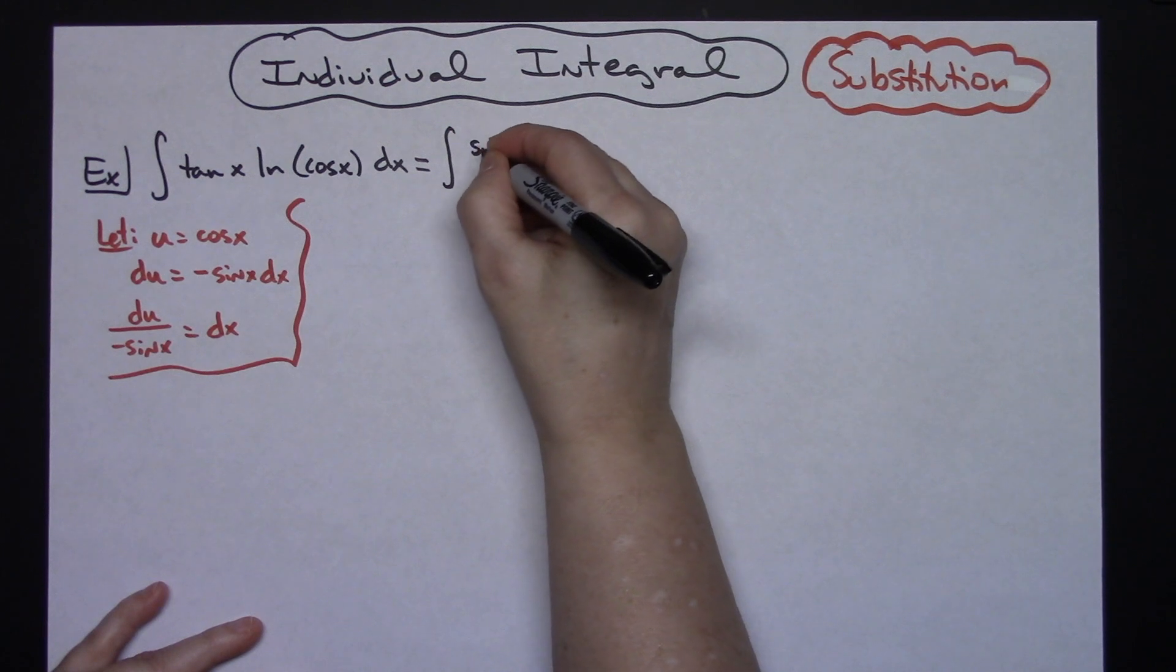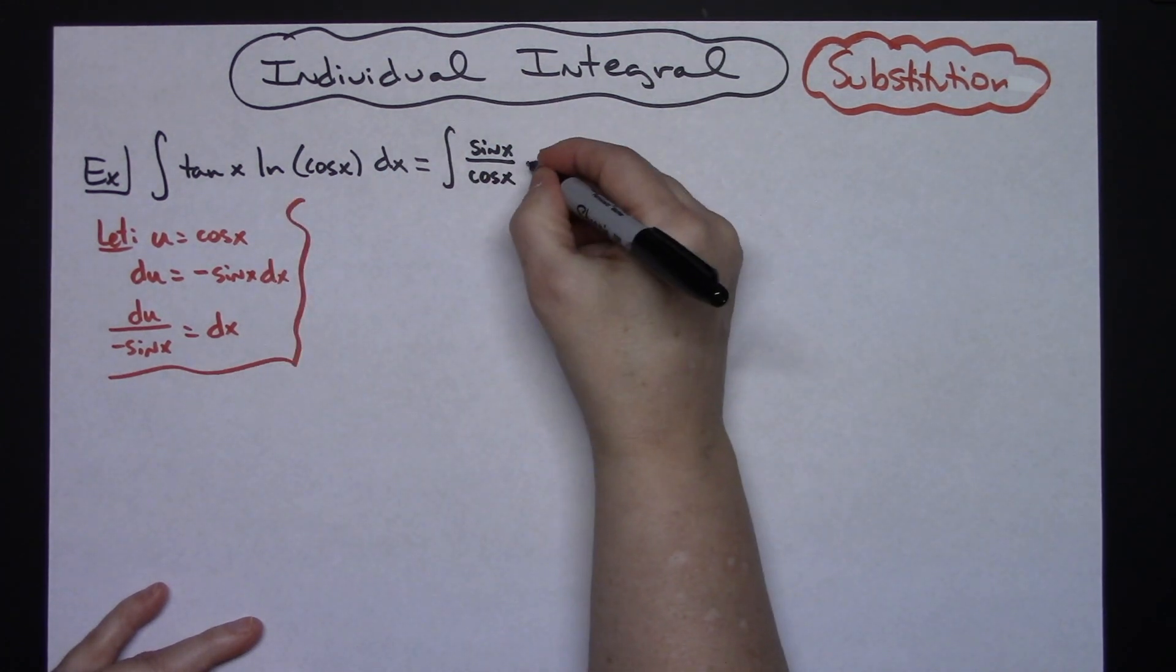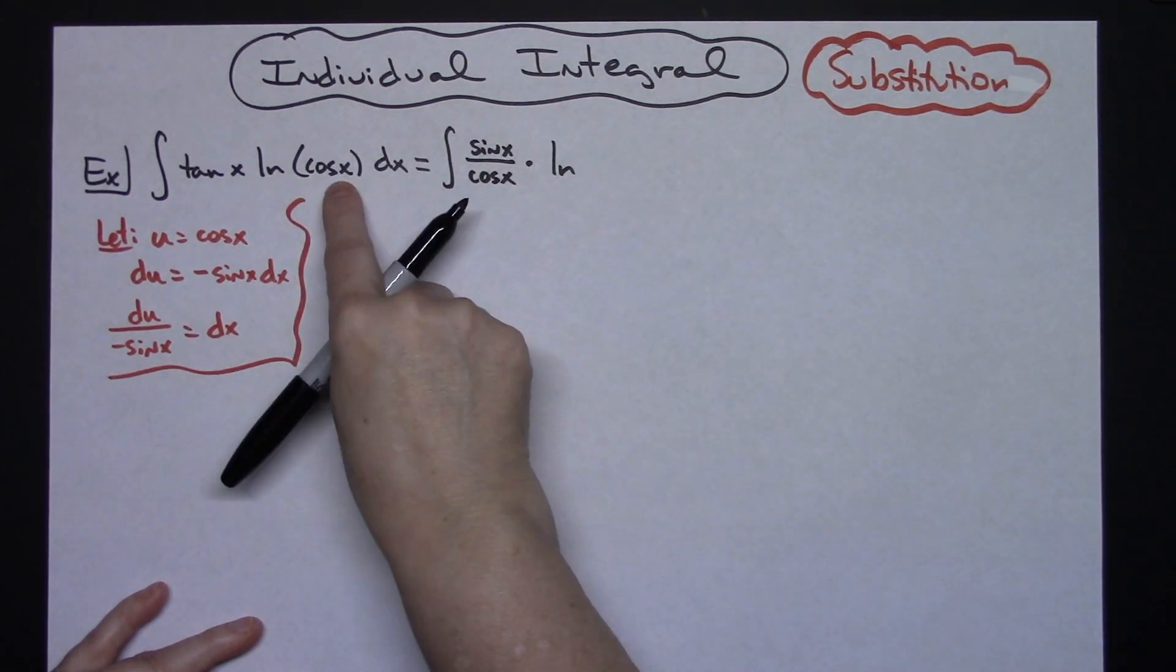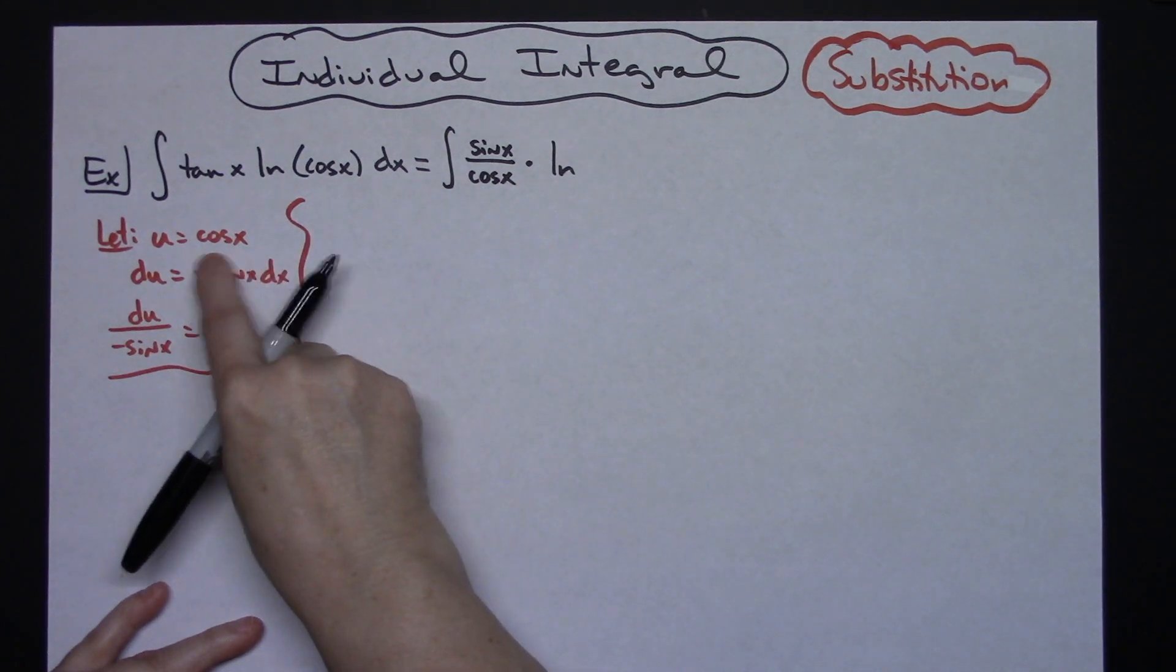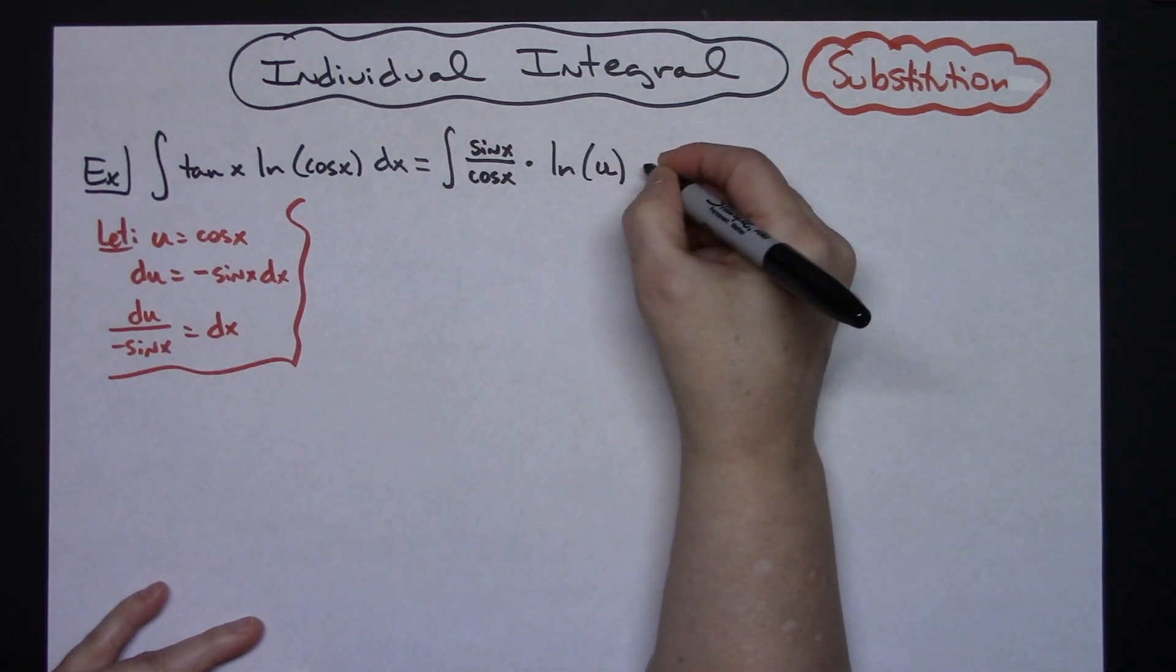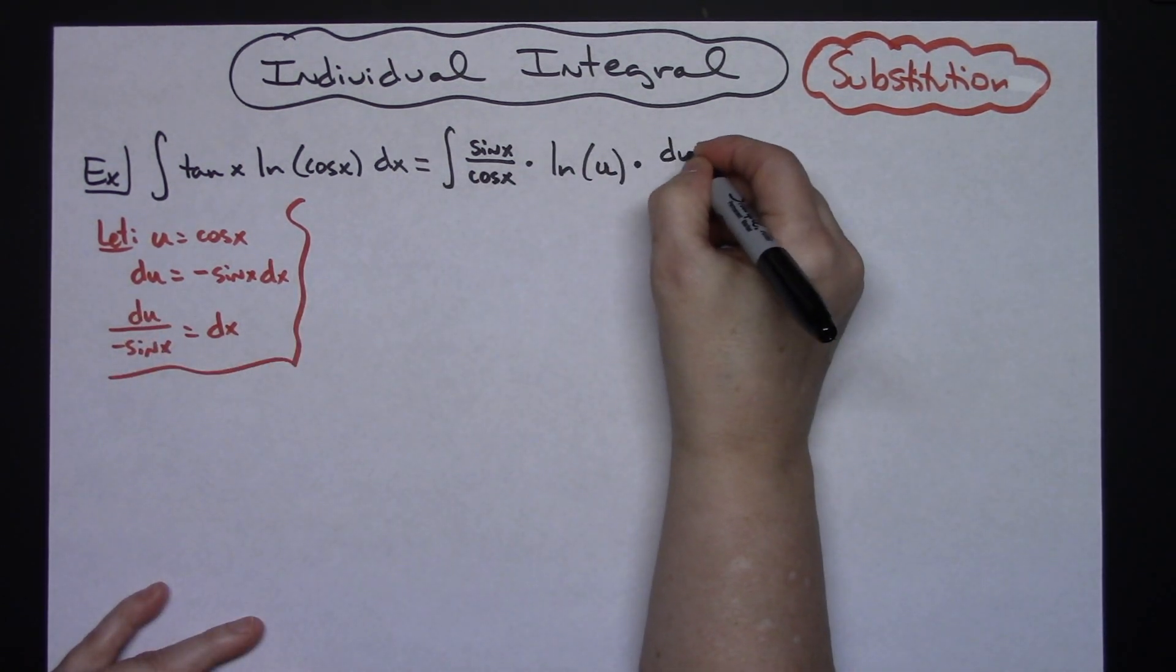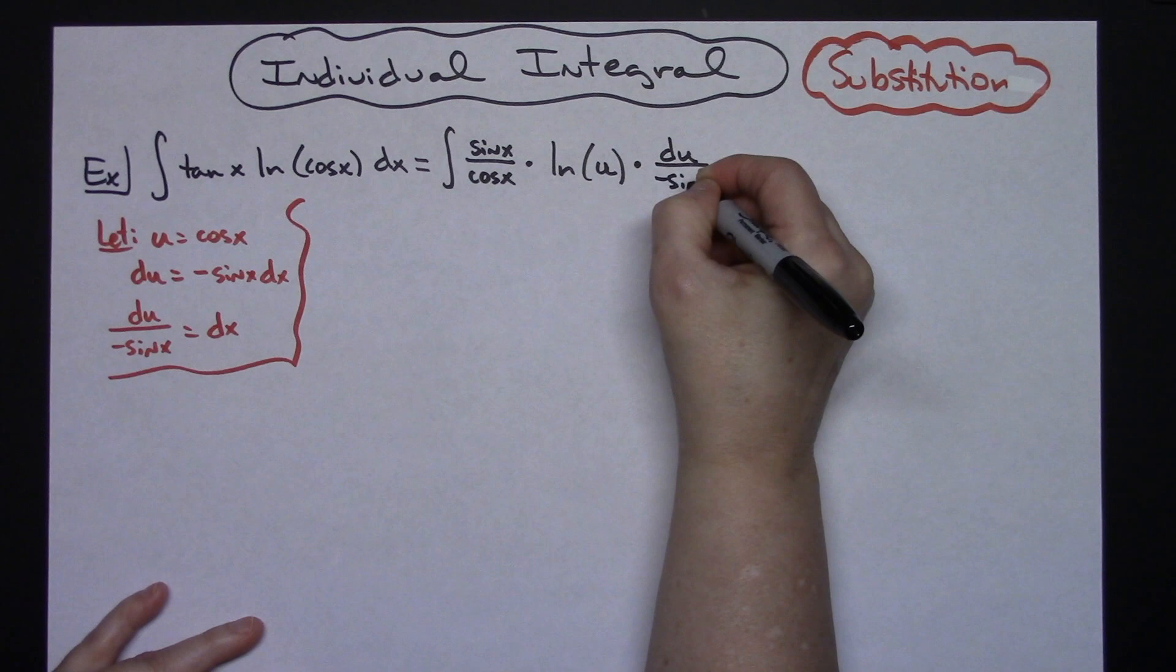Tangent, I'm going to rewrite as sine over cosine x. Okay, now natural log is going to stay put. So natural log I'm going to go ahead and put in the u for cosine x right there. And then I'm going to replace my dx with the du over a minus sine x.